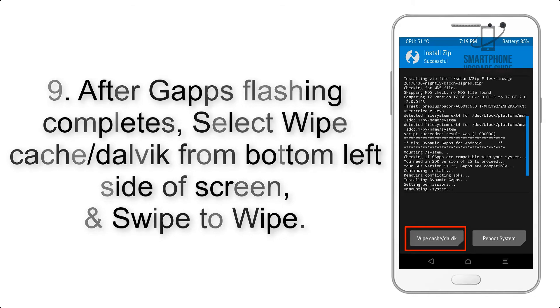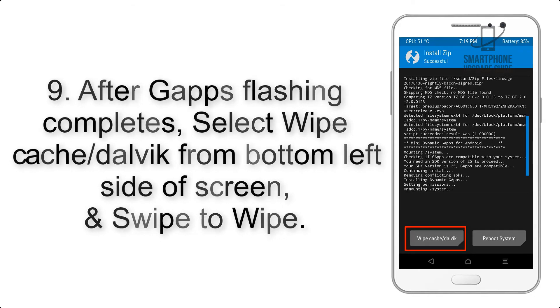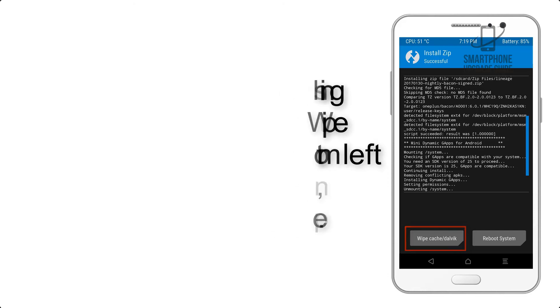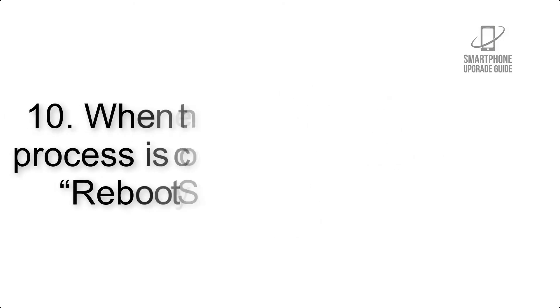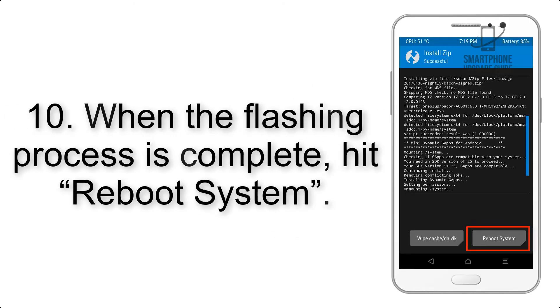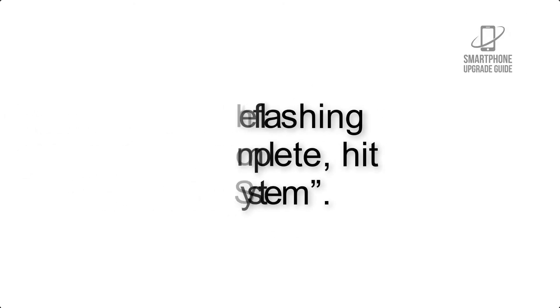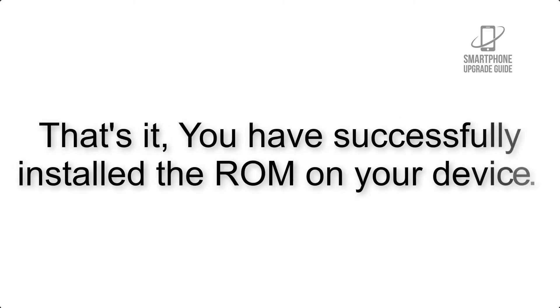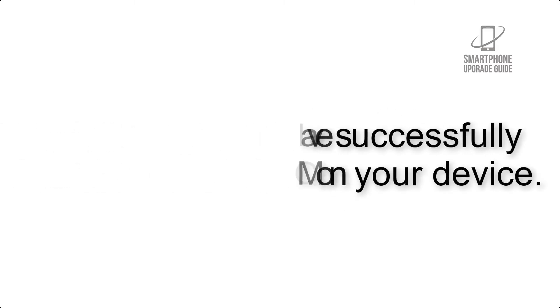Step 9: After GApps flashing completes, select Wipe Cache and Dalvik from the bottom left side of the screen and swipe to wipe. Step 10: When the flashing process is complete, reboot system. That's it — you have successfully installed the ROM on your device.